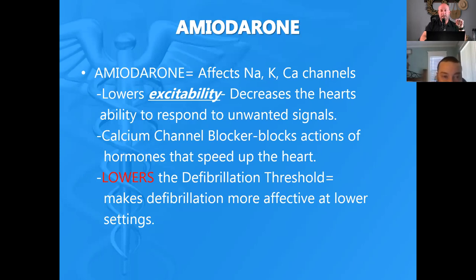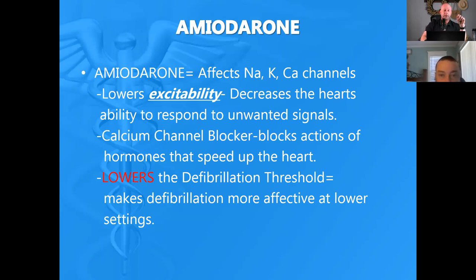Amiodarone is known as an antiarrhythmic, but it also works on the sodium, calcium, and potassium channels of the heart to let the sodium-potassium pump work more effectively. What amiodarone does is it lowers the defibrillation threshold — it makes defibrillation more effective at lower settings. That's why the biphasic Zoll monitors measure chest impedance: you select 200 joules but the Zoll might deliver 180 because it's very effective at selecting energy.